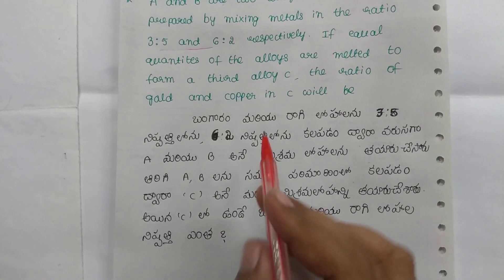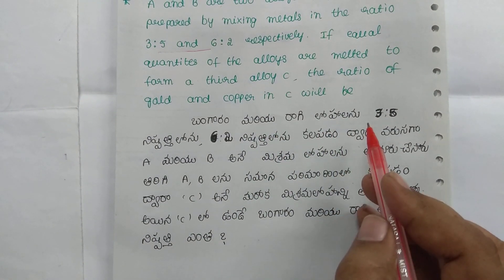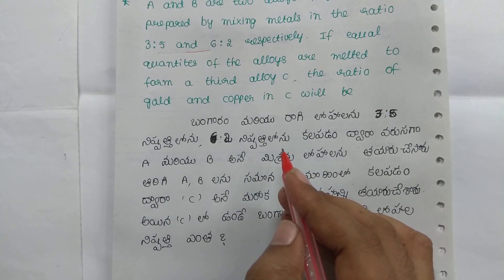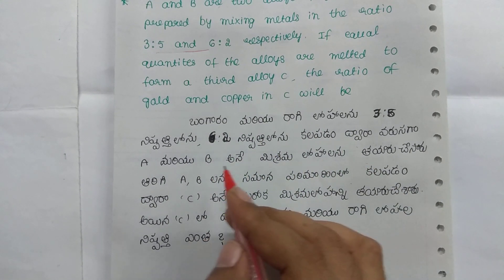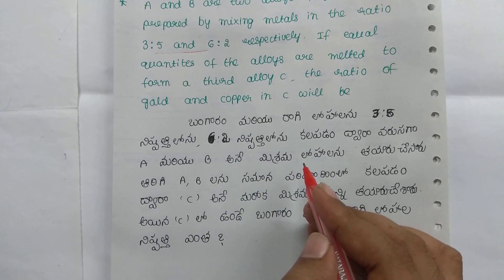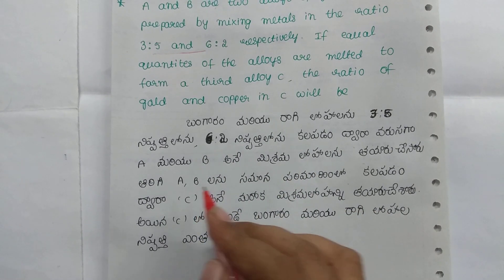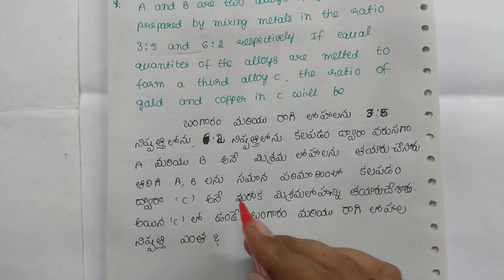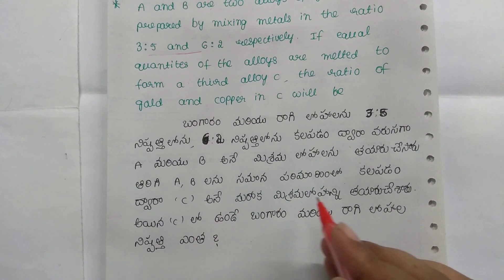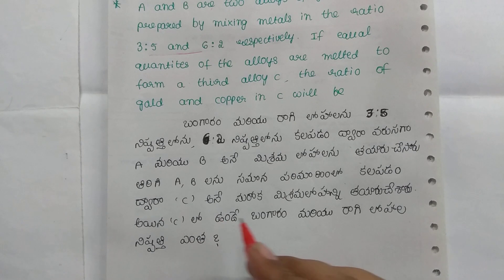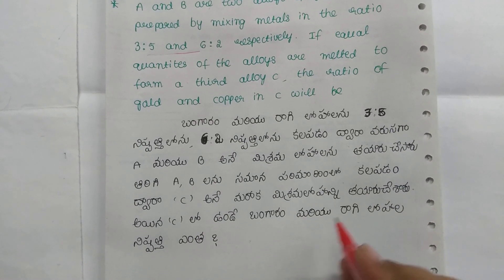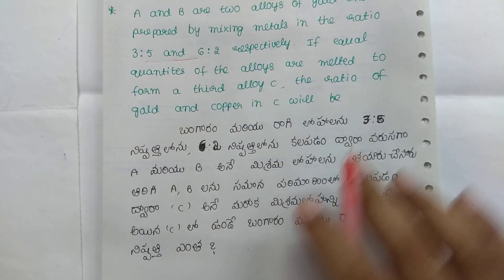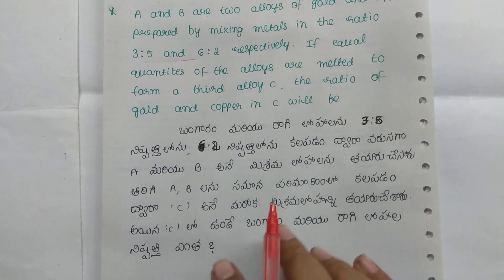I will show you the solution. We have alloy A with ratio 3 to 5, and alloy B with ratio 6 to 2. We need to find the ratio of gold and copper in the resulting alloy C. If you have 3 to 5 and 6 to 2, this is the best shortcut method.